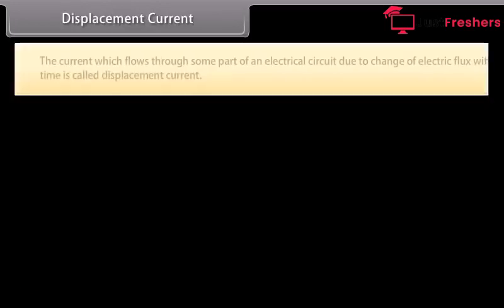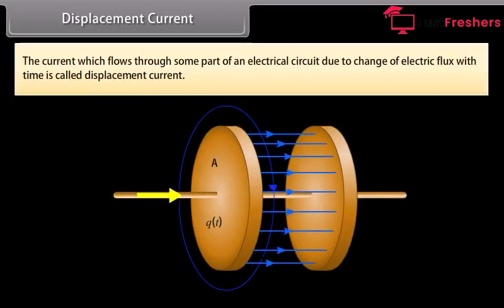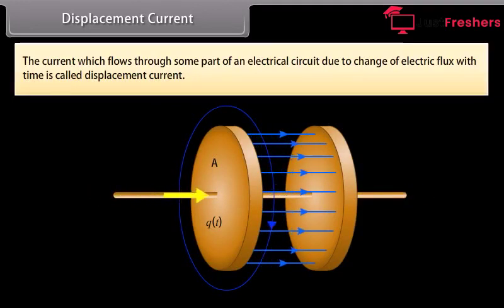Displacement current: The current which flows through some part of an electrical circuit due to change of electrical flux with time is called displacement current.